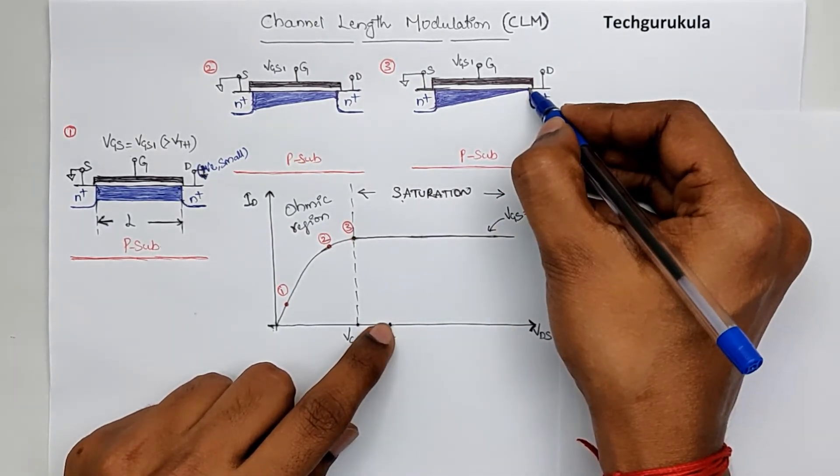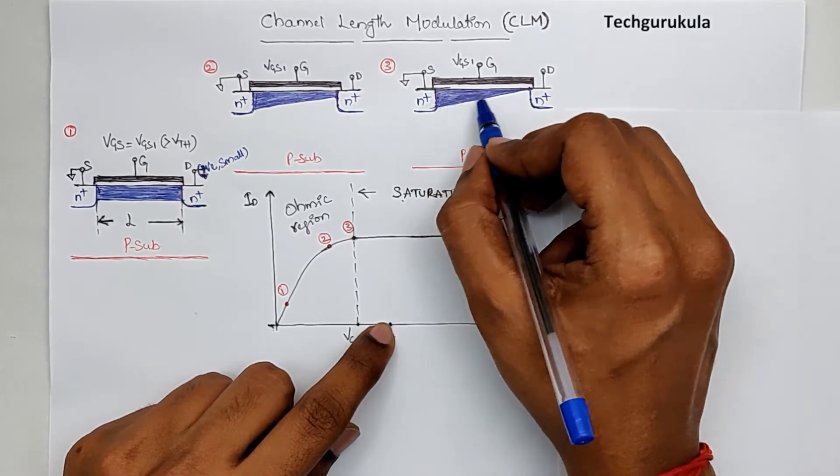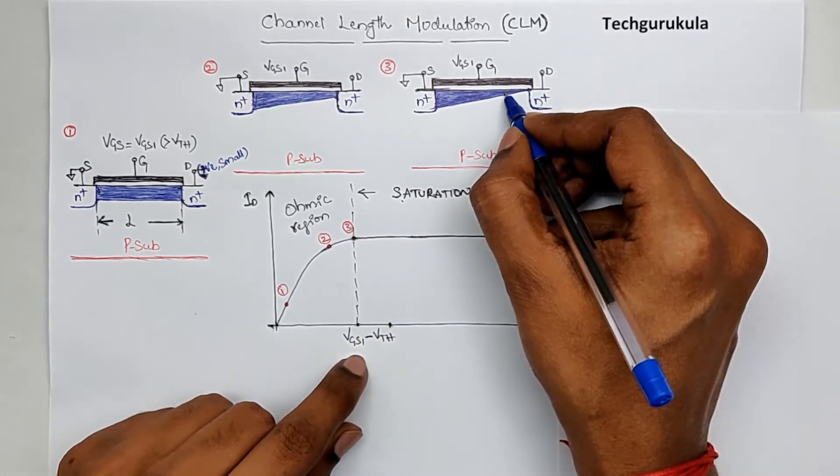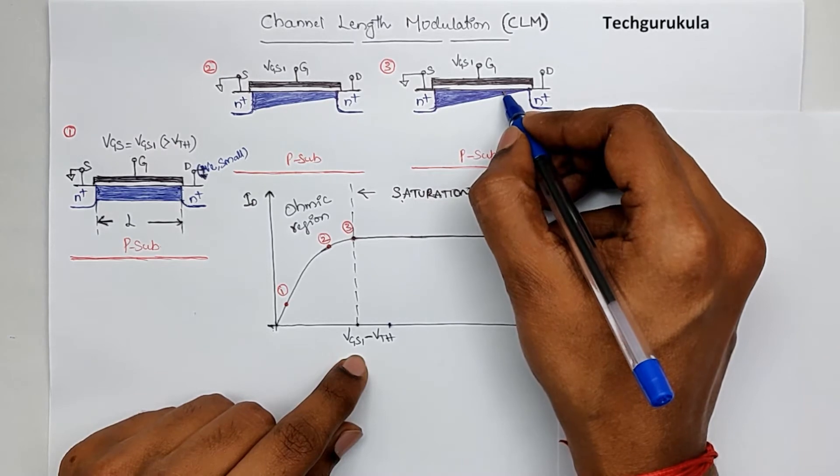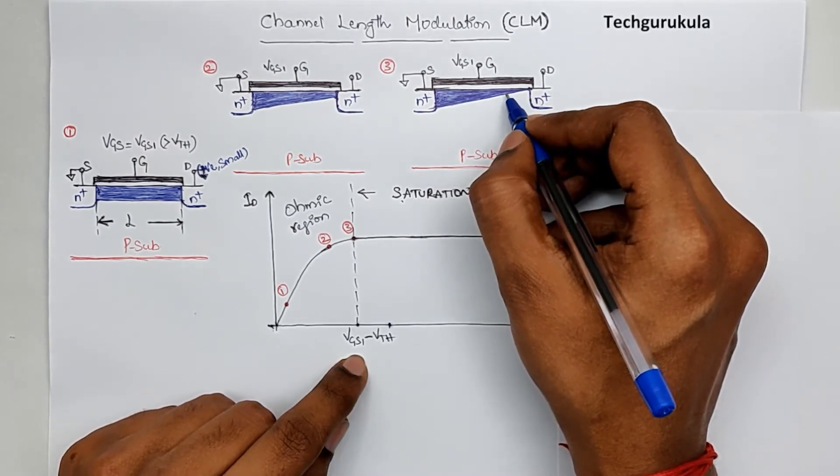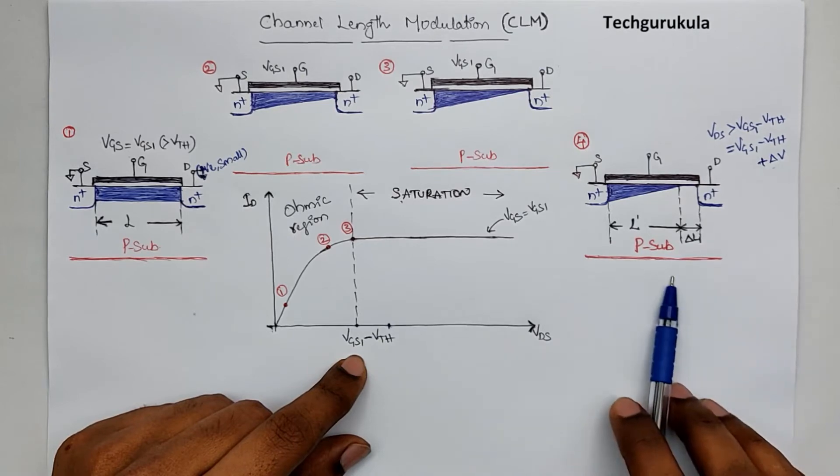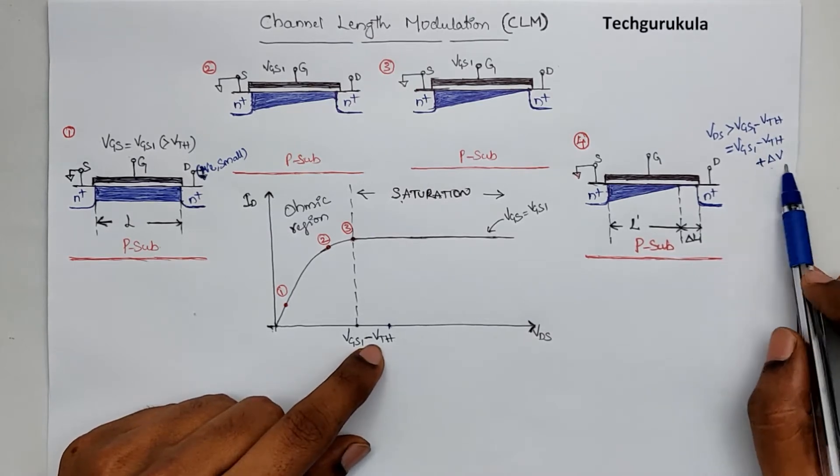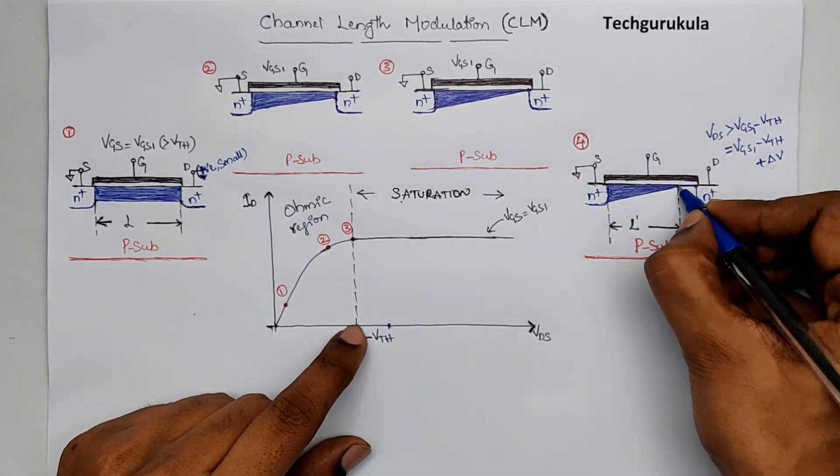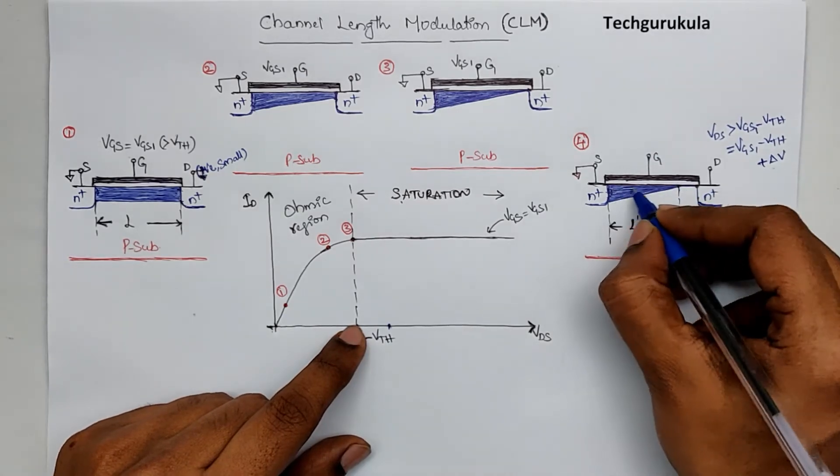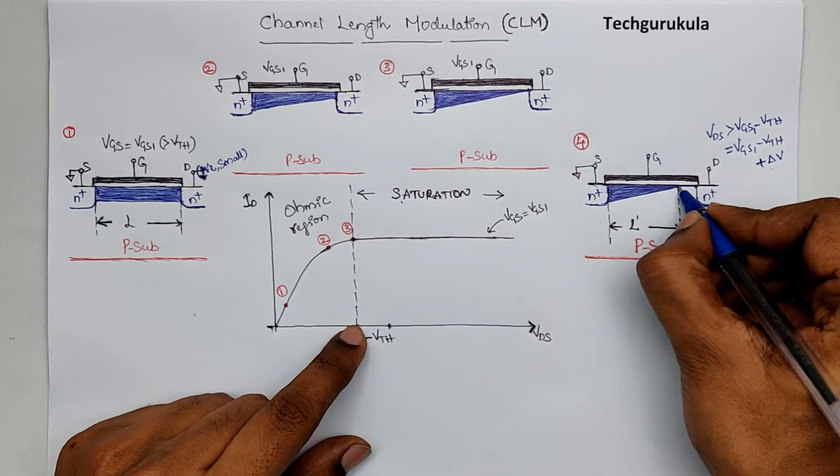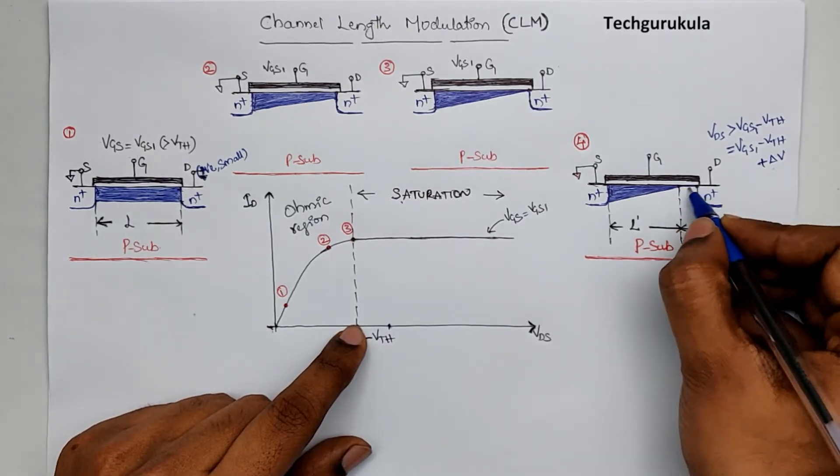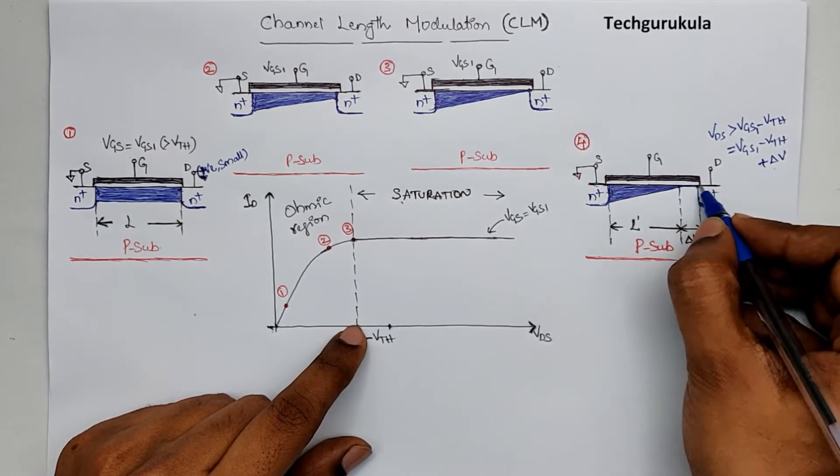If the potential is this value here, as the potential increases from source to drain, there should be a point at which the potential should become VGS1 minus VTH along the channel, in which case at that point the channel should get pinched off. And if you take that scenario and draw the figure, this is how it will look. Where we are assuming the potential that is applied at VDS is greater than VGS1 minus VTH, which is plus let's say the delta V. I'm taking that this is the point at which the potential across the channel would become VGS1 minus VTH, which means this delta V would be dropping across this point where the entire channel here is completely pinched off.